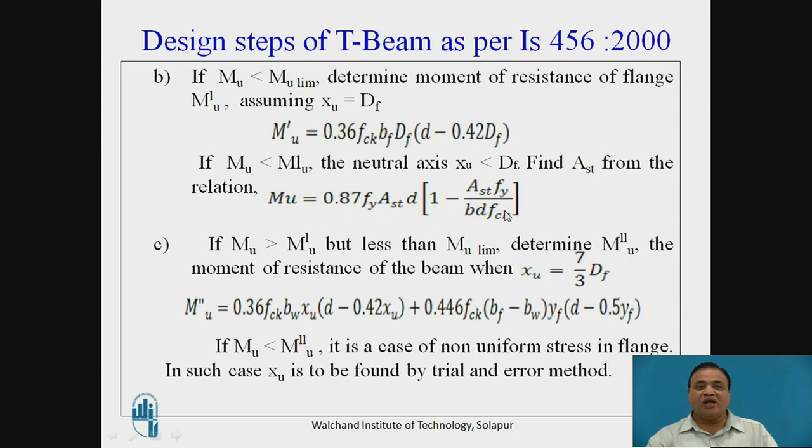Now if MU is greater than MU' but less than MU limit, determine MU' the moment of resistance of the beam when XU is equal to 3 by 7 DF. MU' is equal to 0.36 FCK BW XU into D minus 0.42 XU. This is by considering only the web portion.